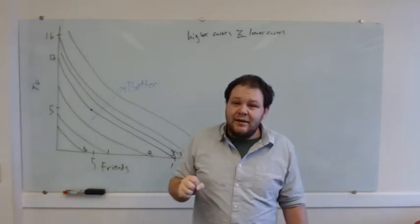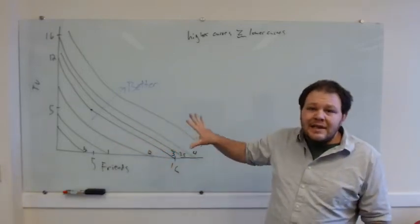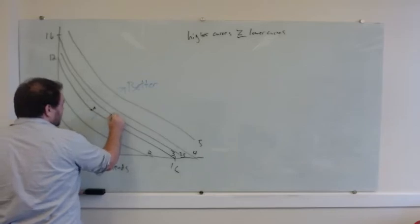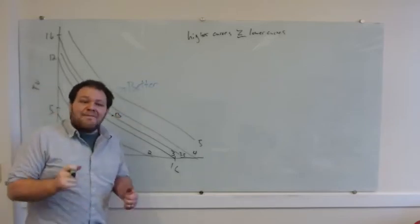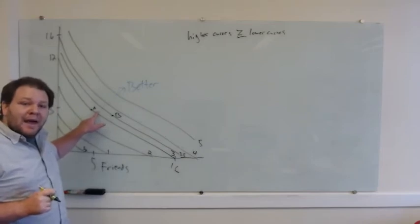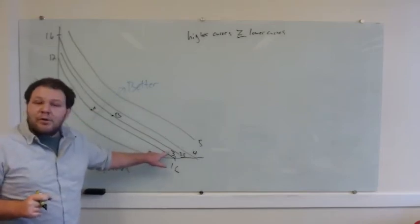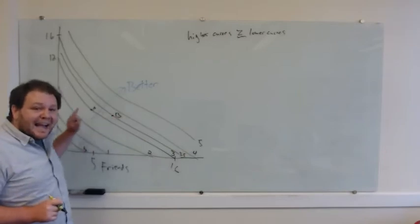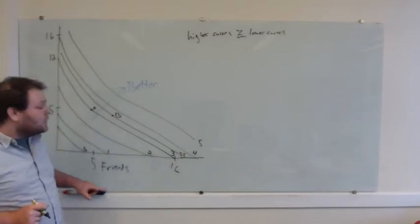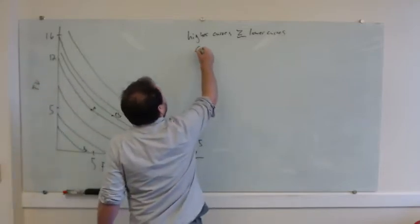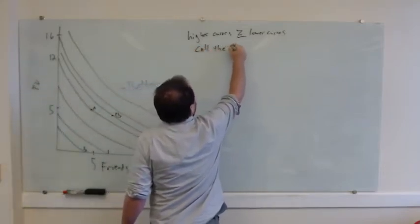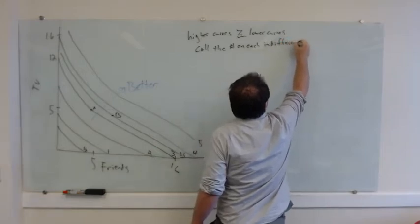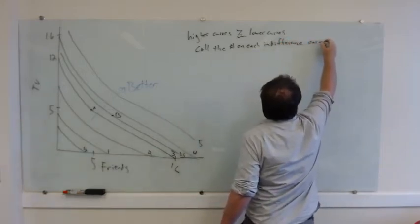What I just did by labeling these curves is I've given you something where for any point you pick — say point A or point B — I've numbered that point. Point A is number three, point B has the number 3.5, and if the number for point B is higher than the number for point A, I prefer point B to point A. I'm going to call these numbers — the number on each indifference curve — utility.